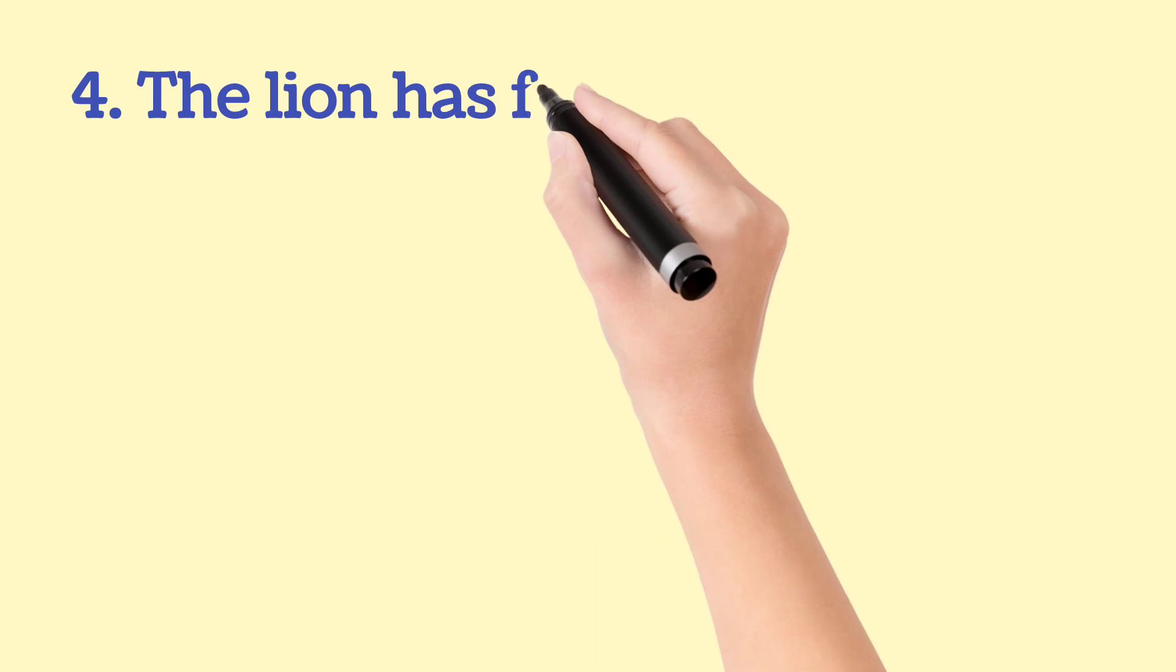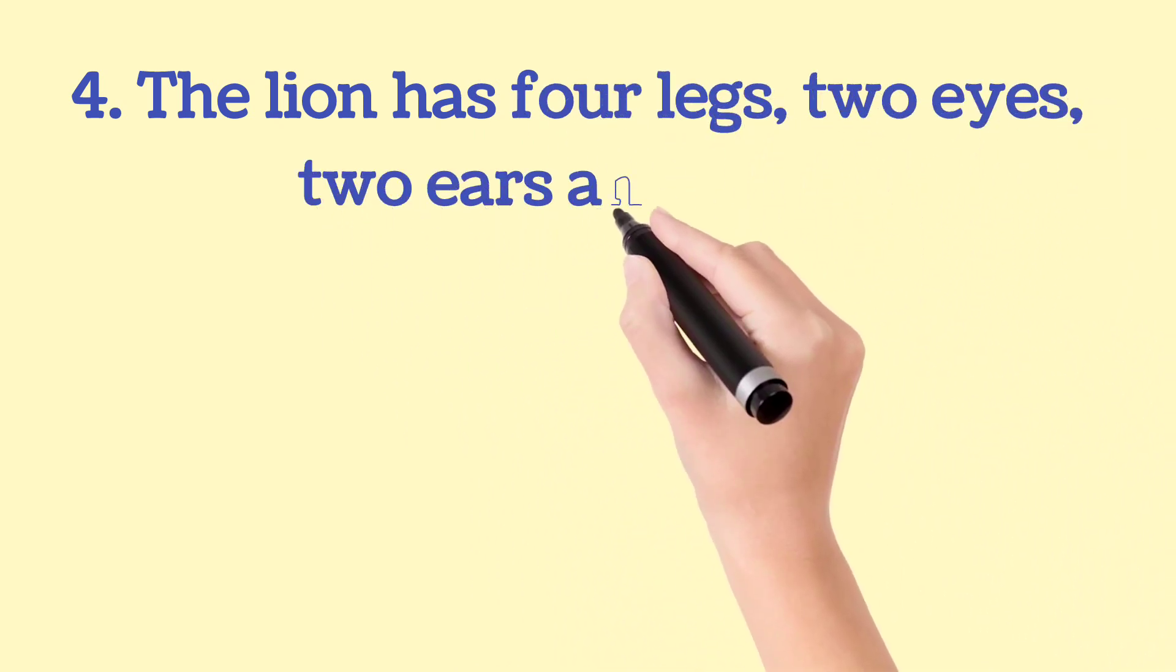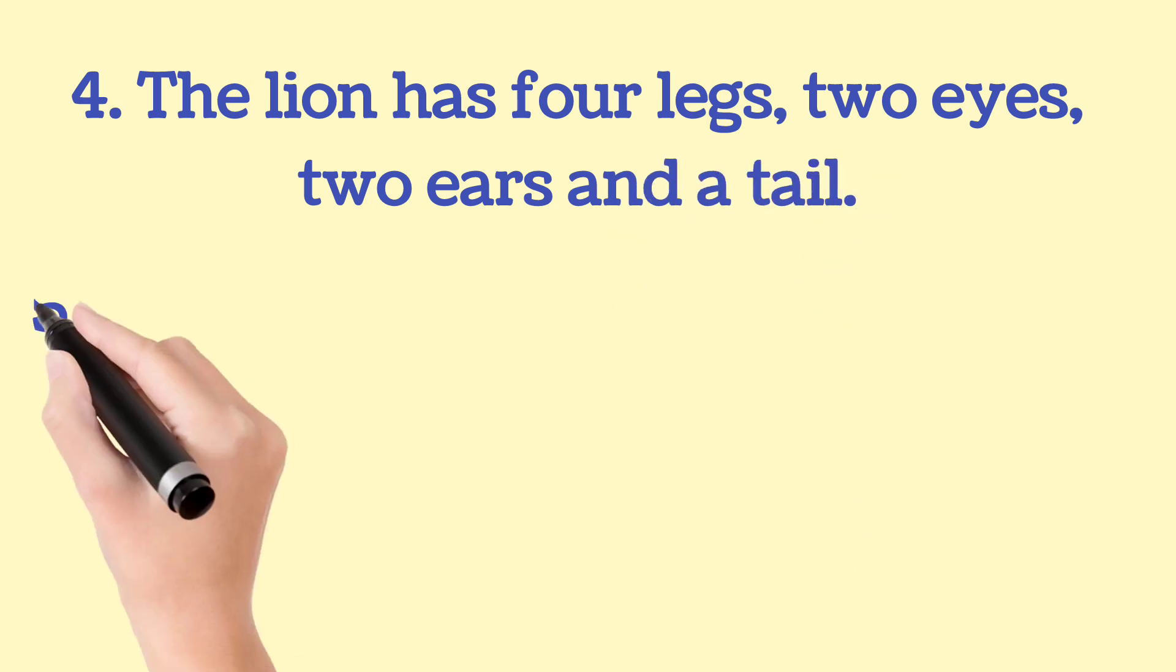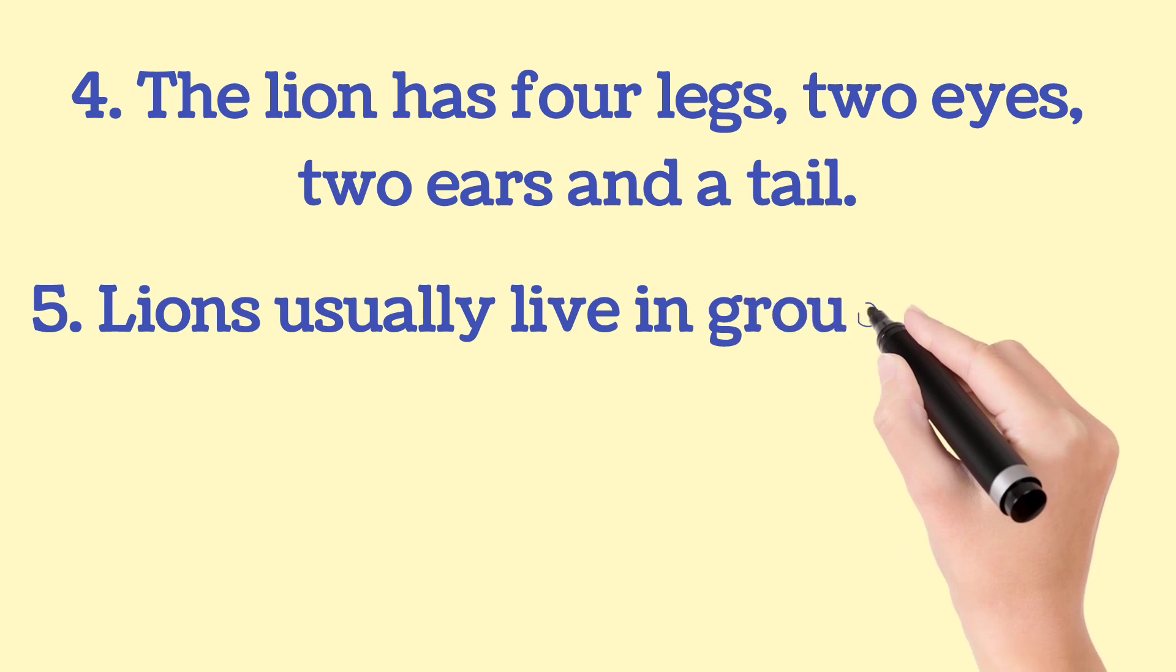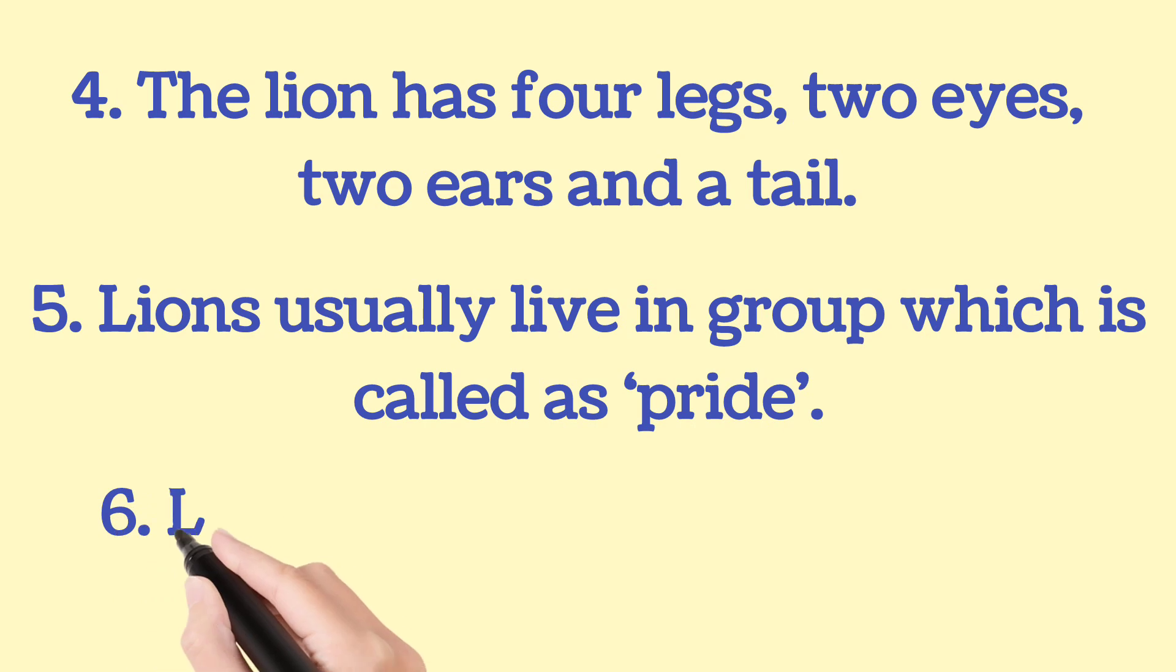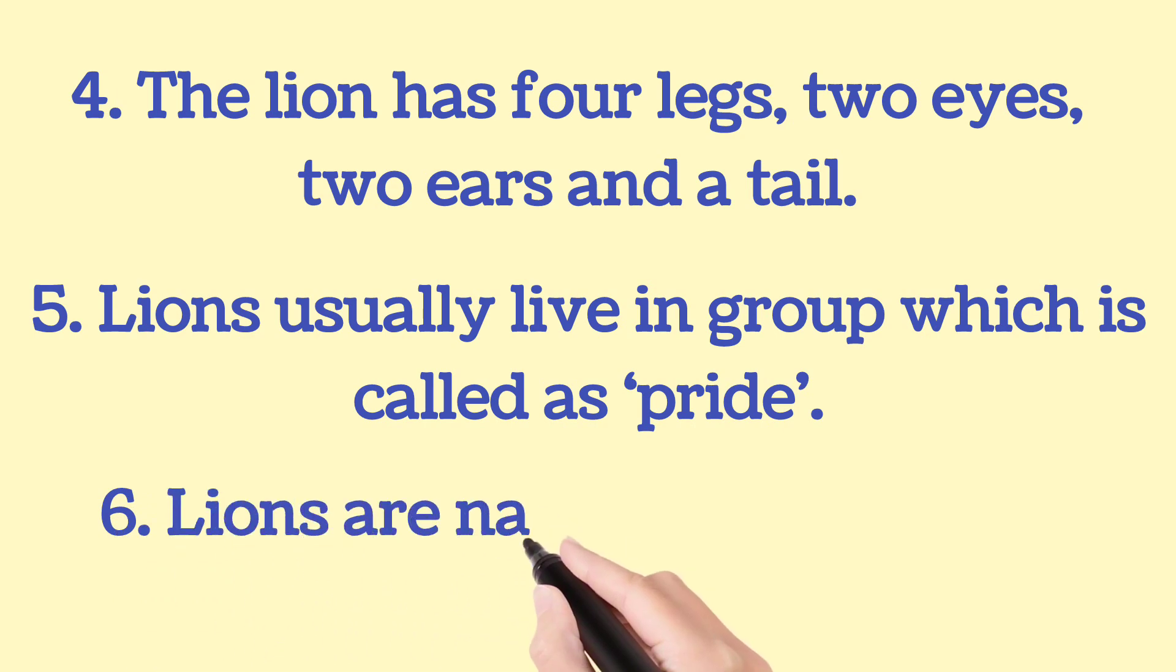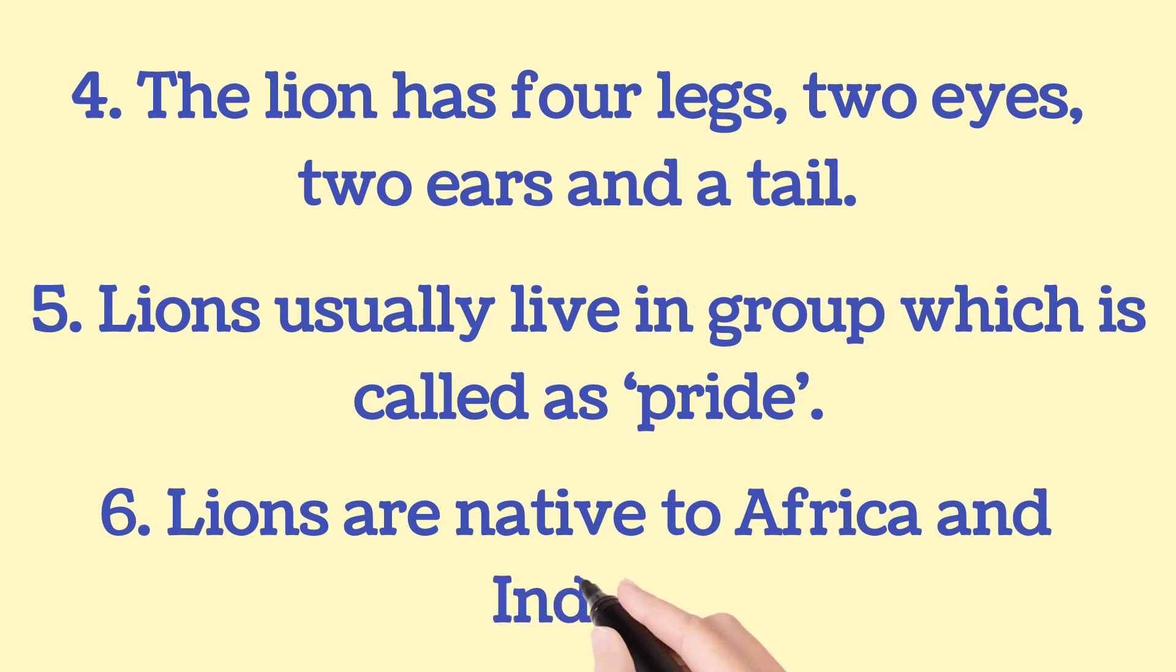The lion has four legs, two eyes, two ears and a tail. Lions usually live in groups which is called as pride. Lions are native to Africa and India.